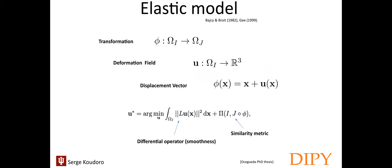The classic elastic model is one of the earliest formulations for nonlinear image registration. In nonlinear image registration, the transformation phi is usually represented by a deformation field named U, that assigns a displacement vector to each point x, such that phi(x) equals x plus the deformation u(x).